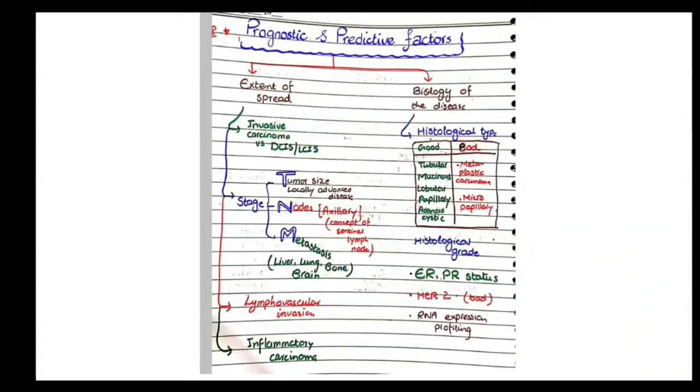Now in the last section of breast cancer pathology, we will discuss prognostic and predictive factors. Prognostic and predictive factors means those factors that determine the prognosis of the patient when she gets diagnosed with breast cancer.